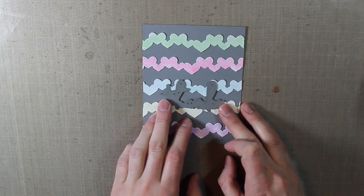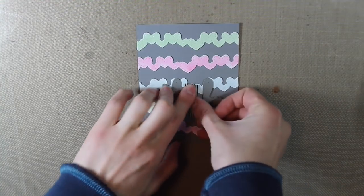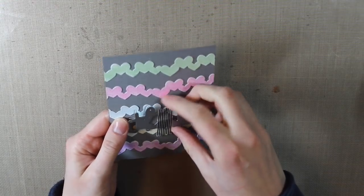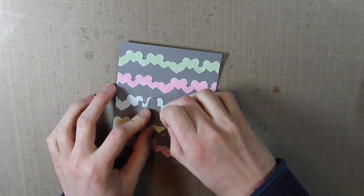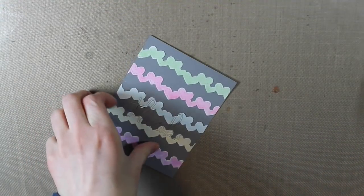I'm using this Thanks die from Paper Smooches. I'm just lining it up onto my cardstock and then I'm going to die cut this in my Cuddlebug. You want to run it through a few times since it's going through a couple layers, that way you won't have any problems trying to pop it out.